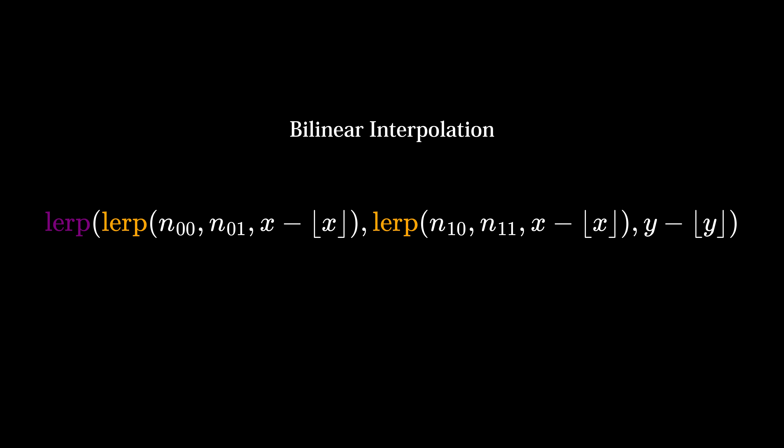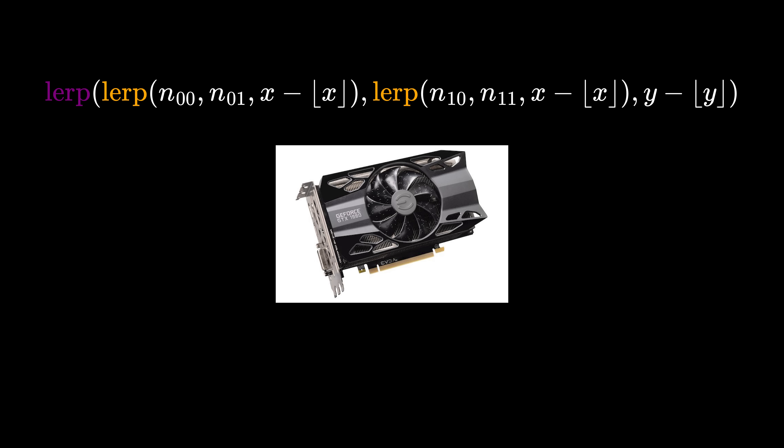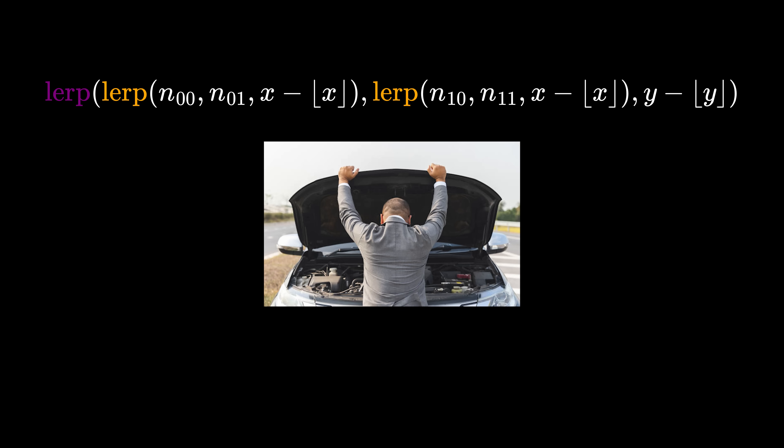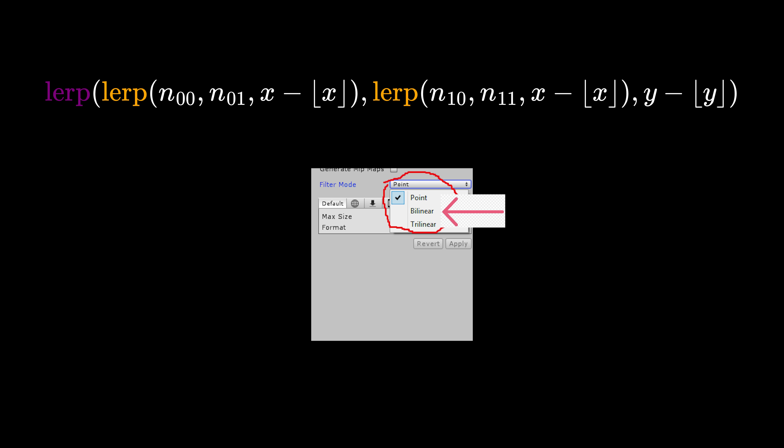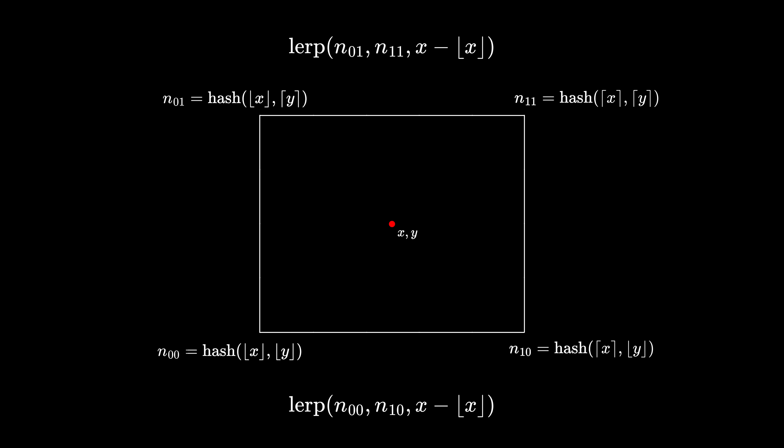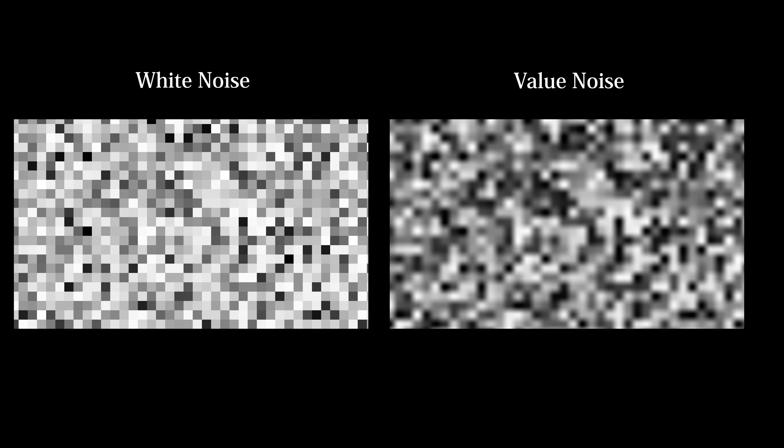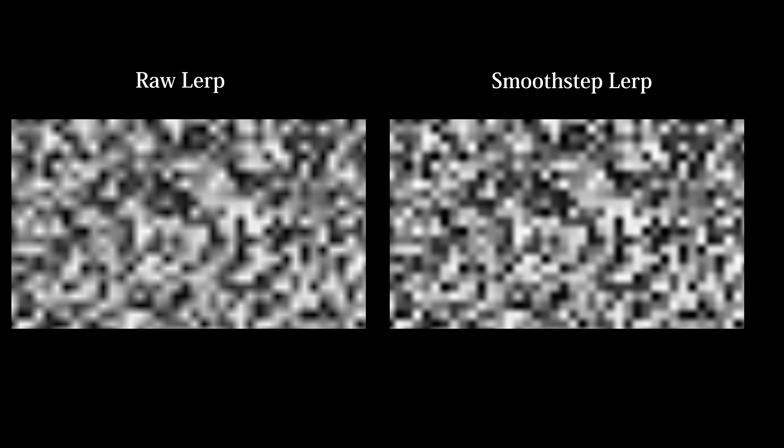This process is known as bilinear interpolation, and it's what your GPU does behind the scenes every time you sample a texture with bilinear filtering enabled. If we expand this process out to the whole lattice grid, we can now visualize our value noise. As you can see, it's a much smoother source of RNG than white noise. Also, here's the comparison between the raw lerp and the smooth step.